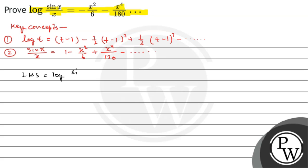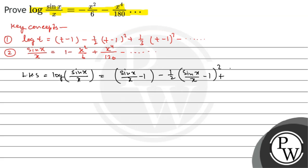Now, for the left hand side, log of sine x divided by x — we substitute sine x divided by x as T, and expand using the Taylor series: (sine x / x minus 1) minus half (sine x / x minus 1) squared plus one-third (sine x / x minus 1) to the power 3, minus so on.